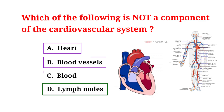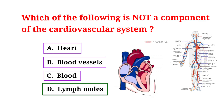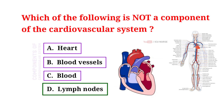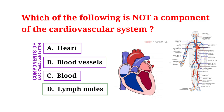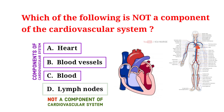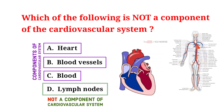Heart, blood vessels, and blood are all components of the cardiovascular system, whereas lymph nodes are not a component of the cardiovascular system.